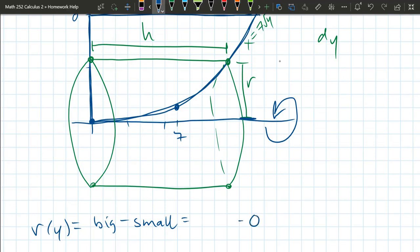Now what's the big? The big is whatever our y value is here. And that will just be y. So r(y) is just y.